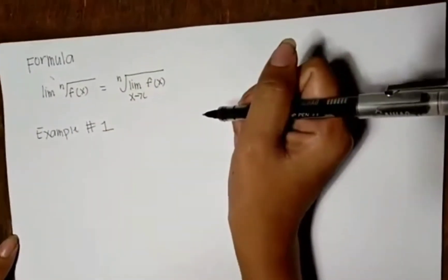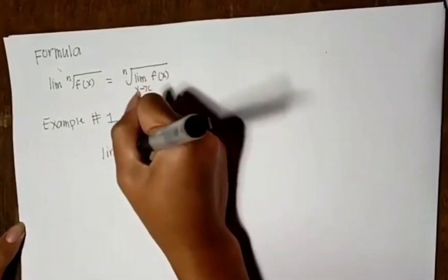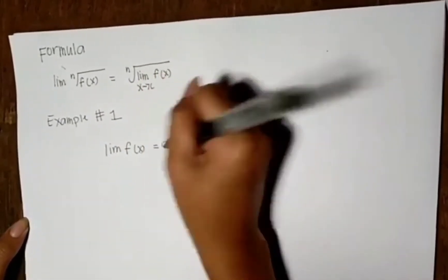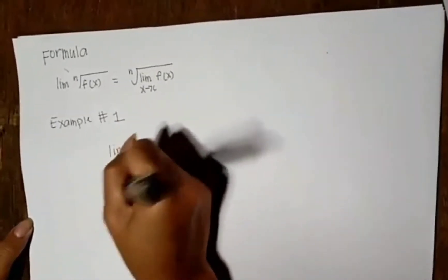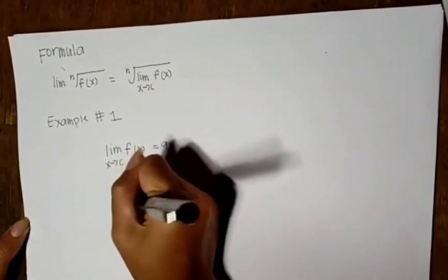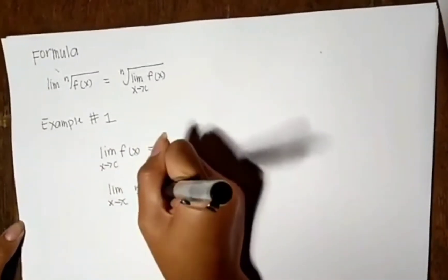Example number 1. Limit of f(x) as x approaches c is equal to 9. Limit of the square root of 9 as x approaches c is equal to 3.